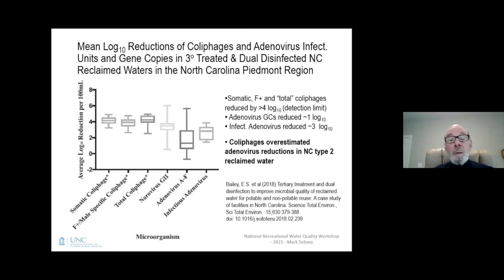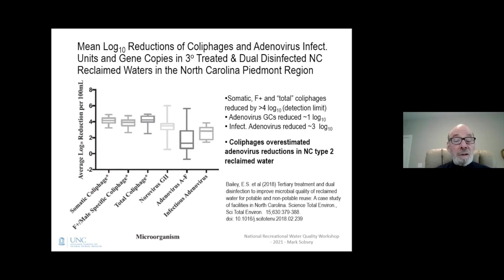In North Carolina, we were interested in the log10 reductions of coliphages and infectious adenoviruses and adenovirus gene copies in highly treated wastewater — so-called tertiary treated dual disinfectant reclaimed water designated in North Carolina as Type 2. We found that log10 reductions of coliphages were 4 to approaching 5 log10, near the detection limit. By comparison, log10 reductions for adenovirus gene copies were only about 1 log10, whereas infectious viruses were reduced by about 3 log10. Therefore, coliphage reductions were overestimating the adenovirus reductions, whether adenoviruses were measured as gene copies or as infectious viruses.